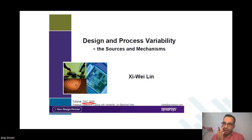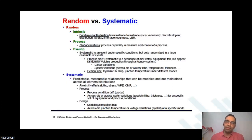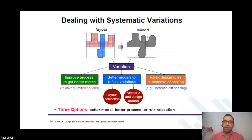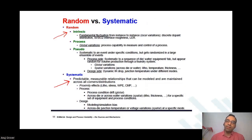When we talk of mismatch or variations, we need to understand that there are two primary kinds of variations: random and systematic. Random variations are variations which are intrinsic in nature — they are kind of global variations. They will appear whatever you may do; those intrinsic process variations will appear. For example, global variations are what we discussed — because of which we get SF lot, SS lot, or TT lot. Gate oxide thickness across the entire wafer is a little higher or a little lesser — that is a global effect.